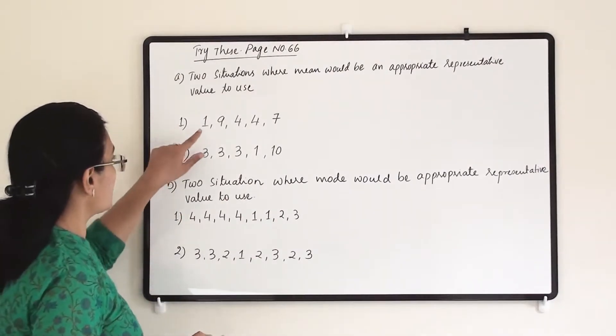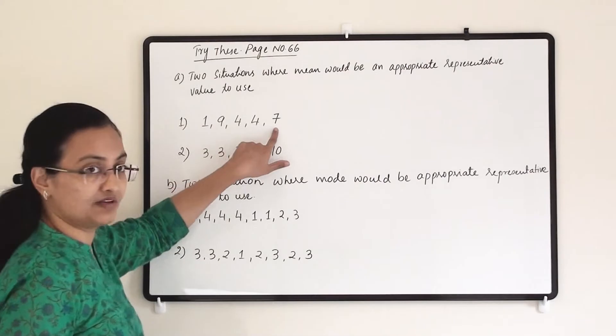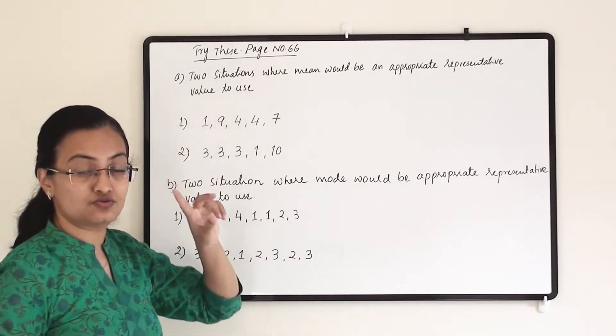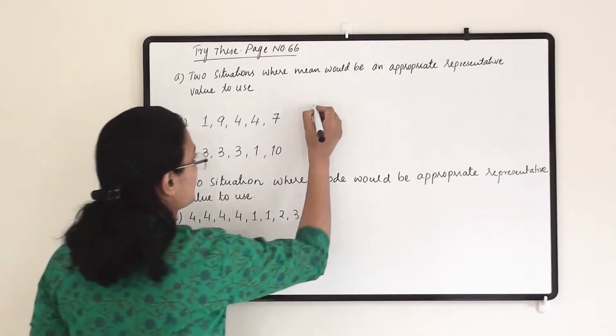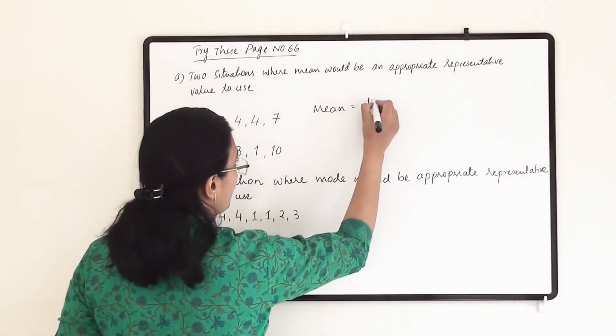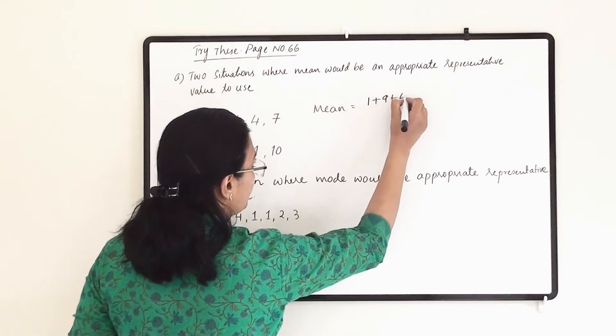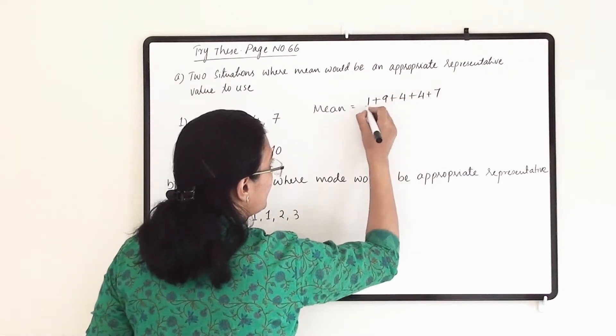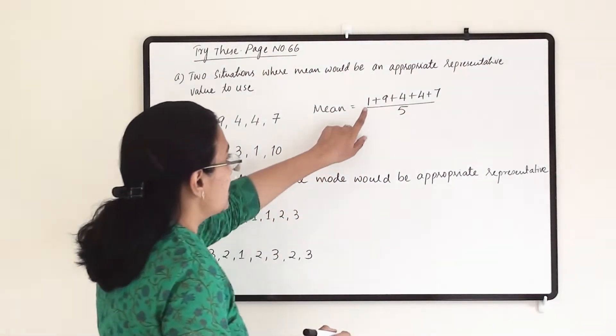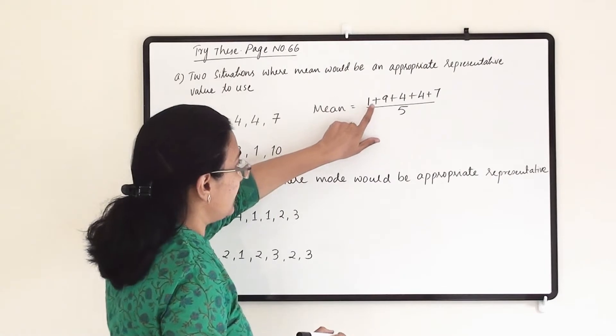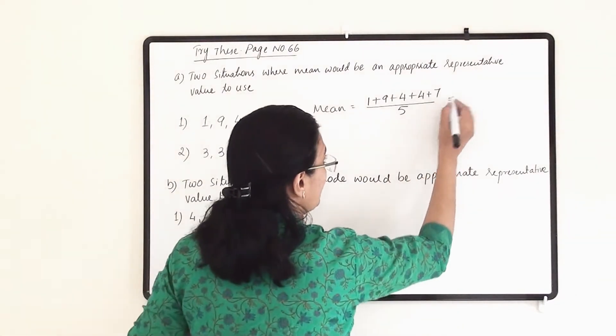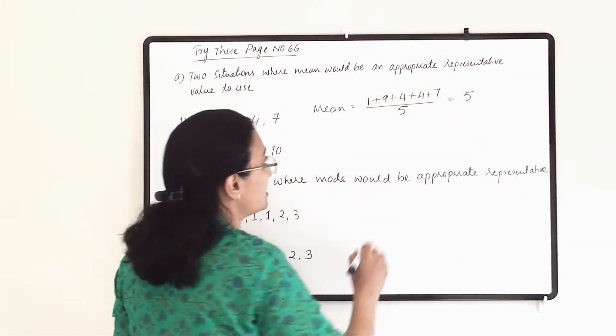So our first observations are 1, 9, 4, 4, and 7. If we write mode here, then 4 is appearing twice, so our mode will be 4. But if we write a mean, then we have to add all these observations. So 1 plus 9 plus 4 plus 4 plus 7 divided by the number of observations, which is 5. So here we will get 25. 25 divided by 5 is 5, so our mean is 5.